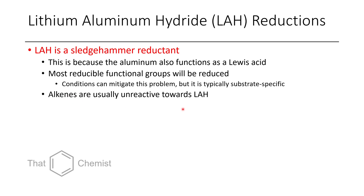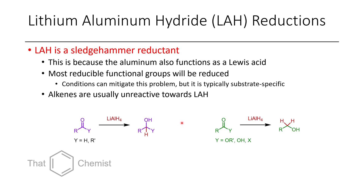For aldehydes and ketones, LAH reduces them the same way sodium borohydride would. For esters, carboxylic acids, or acyl halides, LAH converts these all the way to the primary alcohol — delivering two equivalents of hydride. However, if you treat an amide with lithium aluminum hydride, it reduces to the amine. The alkoxy group is extruded from an ester, but the amino group is retained in an amide because it can go through an iminium intermediate before the final delivery of a hydride.